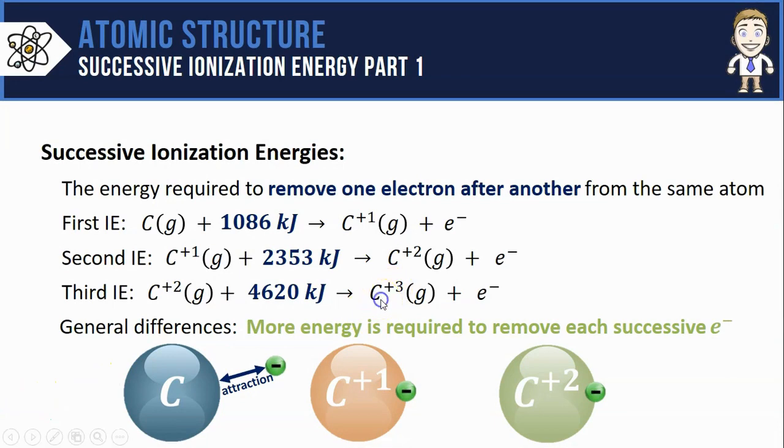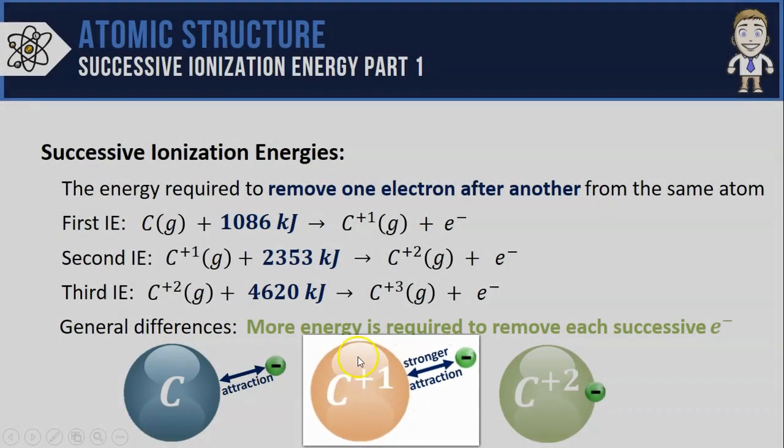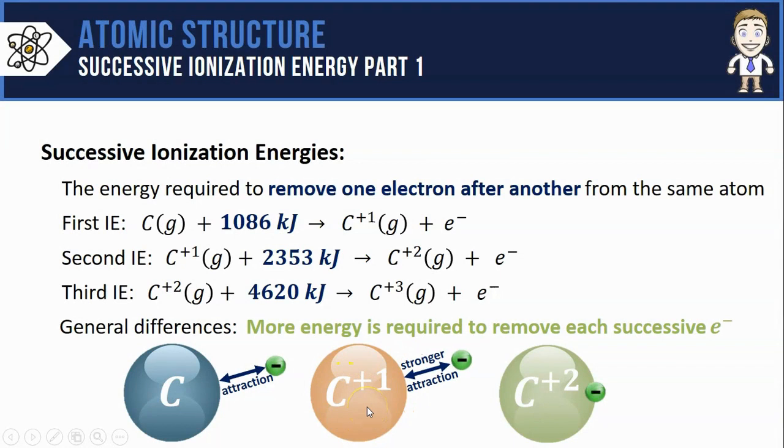It takes more energy to remove this second electron because not only is that electron attracted to the nucleus of the carbon, but the attraction is stronger because now the entire carbon atom also has a plus one charge. That increased charge magnitude results in a stronger attraction and requires more energy for the electron to be removed.